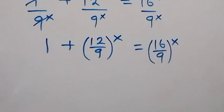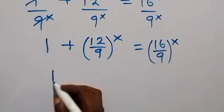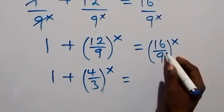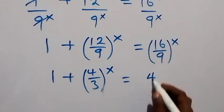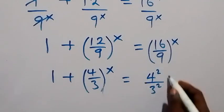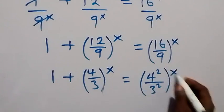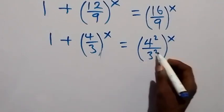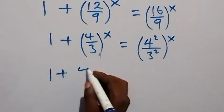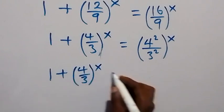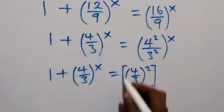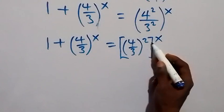We reduce the fractions: 3 goes into 12 and into 9, so 12/9 simplifies to 4/3. We have 1 plus (4/3)^x equals (16 over 9)^x. We rewrite 16 as 4 squared and 9 as 3 squared, so the right side becomes ((4/3)^2)^x.